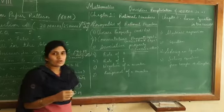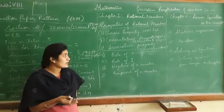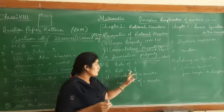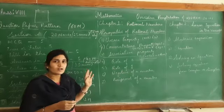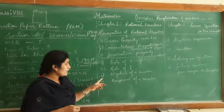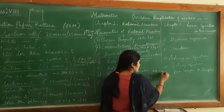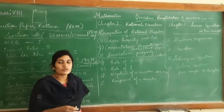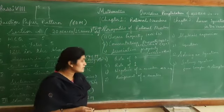After this we have role of zero - role of zero is nothing but additive identity. If you add zero to any rational number, the answer is the rational number itself. Role of one: if you multiply one to any rational number, the answer is the number itself - this is multiplicative identity. Next comes negative of a number, which is nothing but additive inverse: a plus (-a) equals zero.